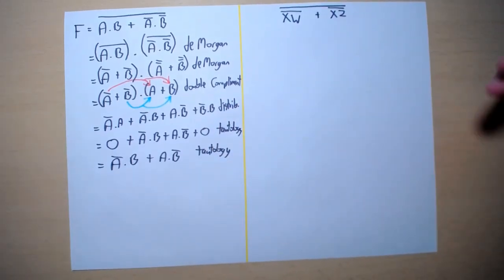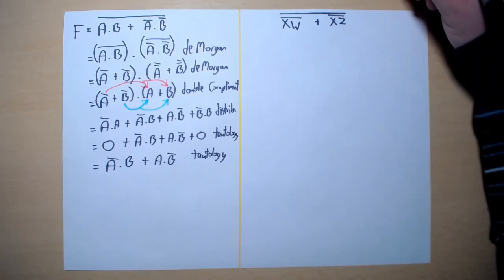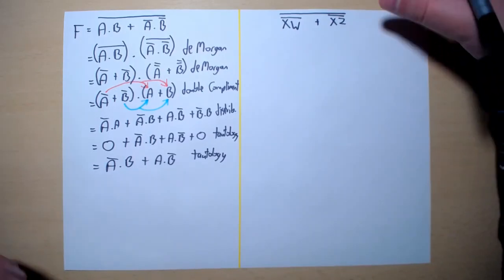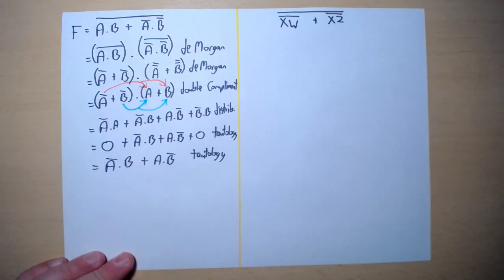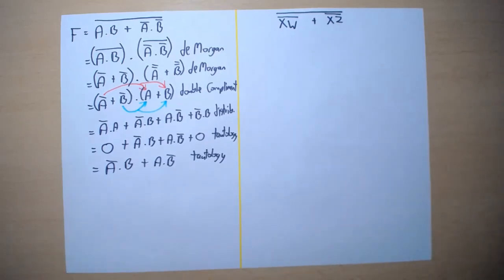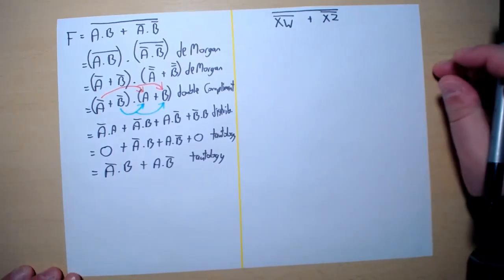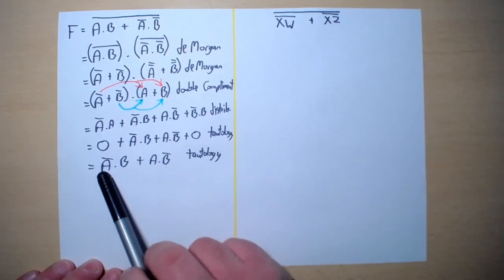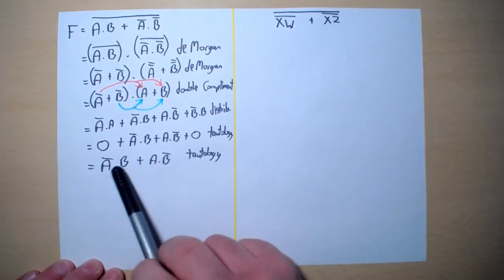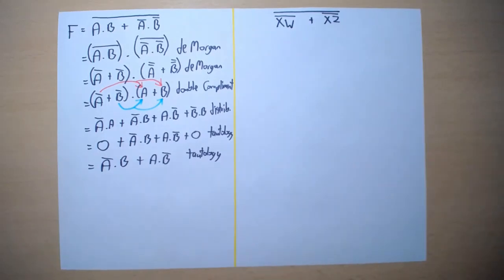And that is the expression fully minimized. We can do another step because this particular pattern gives us a particular gate. There is a logic gate, you can see an explanation for it in one of the other videos, which is called the XOR gate, exclusive OR.